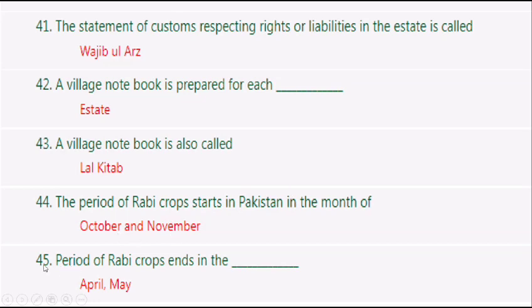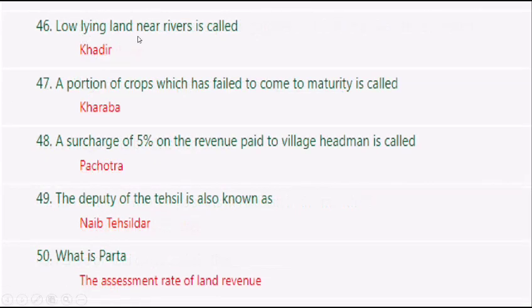The period of Rabi crops ends in April and May. Low land near rivers is called Khadir. A portion of crops which has failed to come to maturity is called Kharaba. A surcharge of 5% on the revenue paid to the village headman is called Pachotra.